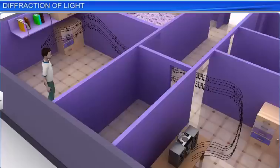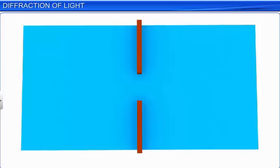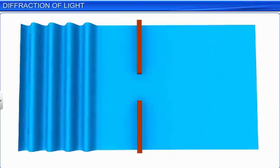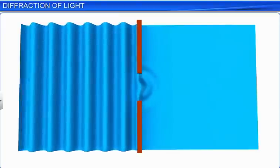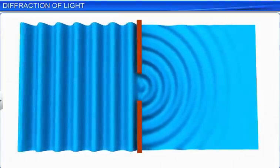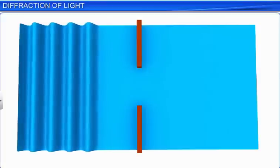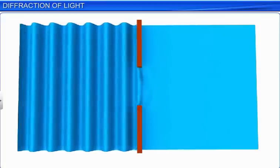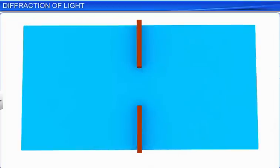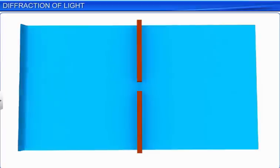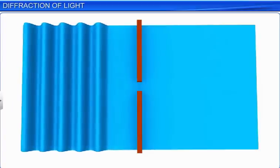All types of waves exhibit this phenomenon. Observe the diffraction of water waves at a narrow slit placed on their path. When the size of the slit is large, the diffraction of water waves is quite negligible. On the other hand, when the size of the slit is very small, we observe the diffraction of water waves very clearly.